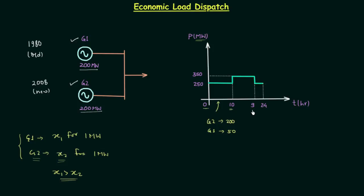From 10 hours to 19 hours, the demand is 350 megawatt. We run generator G2 to its full capacity of 200 megawatt and obtain the remaining 150 megawatt from generator G1. From 19 to 24 hours, the demand is again 250 megawatt, so we follow the same scheme as the first period. This process of satisfying the load most economically is known as economic load dispatch.